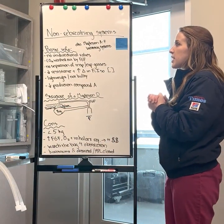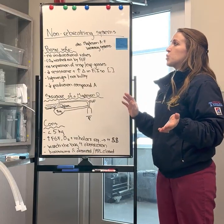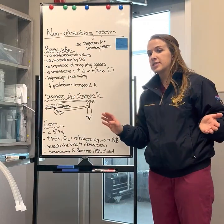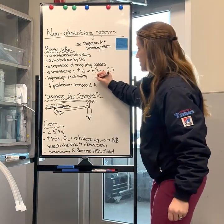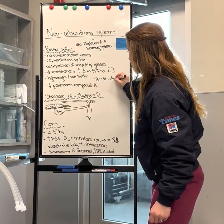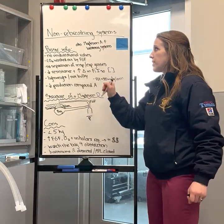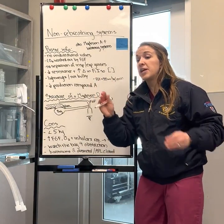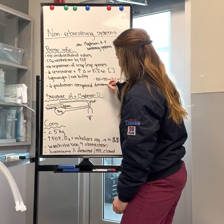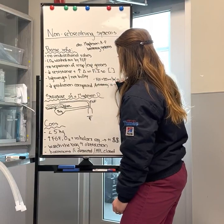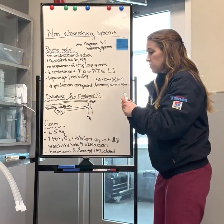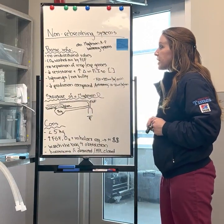Just like every choice for an anesthetized patient, you need to be selective about using a non-rebreathing system, as it is not appropriate for all patients. The fresh gas flow rate requirement is 300 ml/kg/min, compared to re-breathing systems which can be run as low as 10 up to 30 ml/kg/min, because re-breathing systems scrub CO2 and allow the patient to rebreathe their gases. That is a significant difference in required flow rates between the two systems.